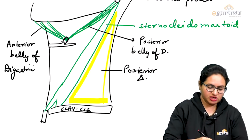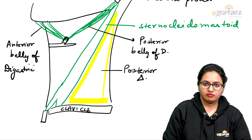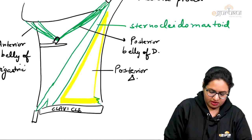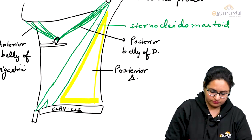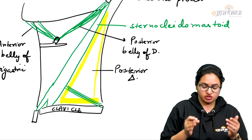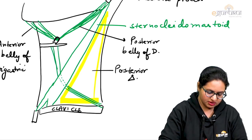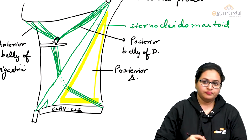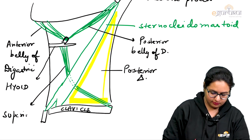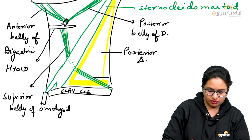Another muscle which helps in the subdivision is the omohyoid muscle, having a superior belly and an inferior belly. The inferior belly takes origin from the superior border of the scapula, coming from the posterior aspect and running upwards. When running upward, it is present in the posterior triangle. It forms an intermediate tendon lying deep to the sternocleidomastoid, and then continues as the superior belly of omohyoid, which is attached to the inferior margin of the hyoid bone.